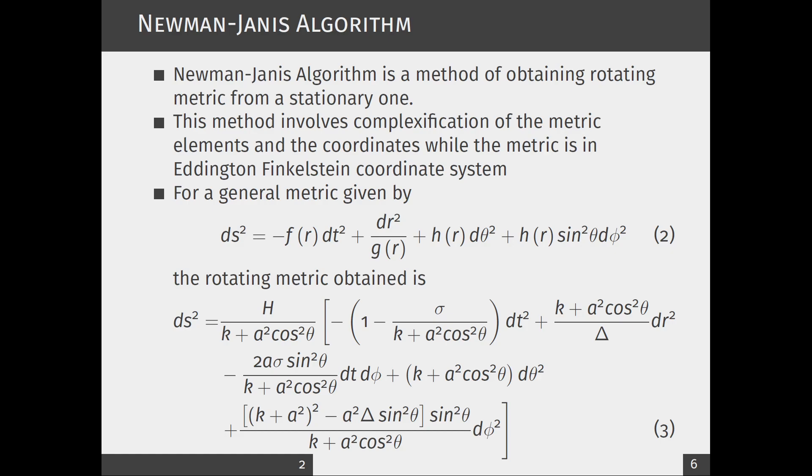Suppose we take a general metric ds² = -f(r)dt² + dr²/g(r) + h(r)dΩ². The rotating metric obtained using the modified Newman-Janis algorithm is given as equation number three.